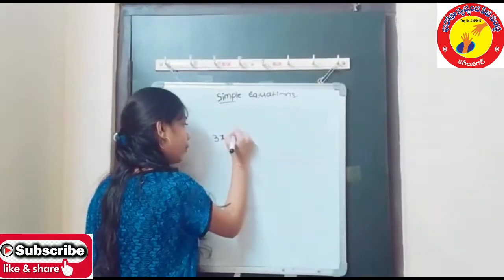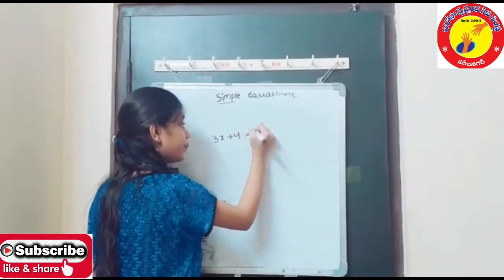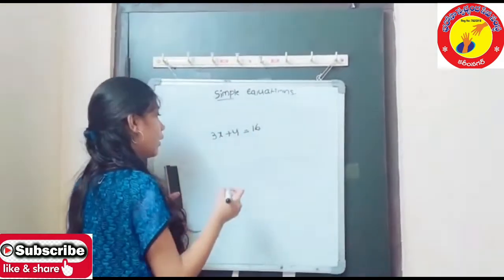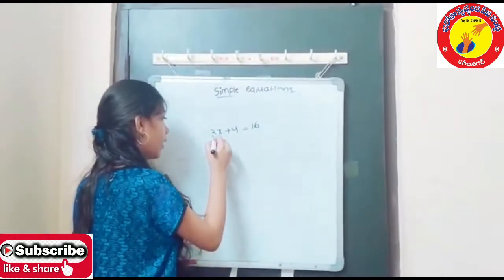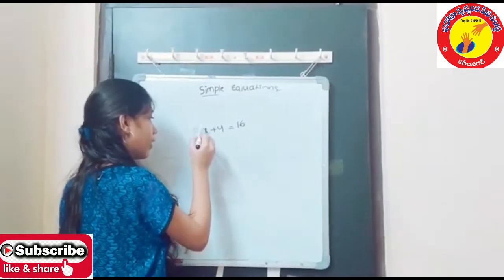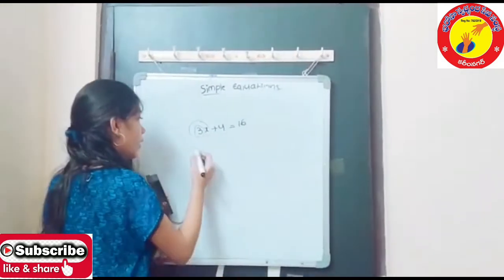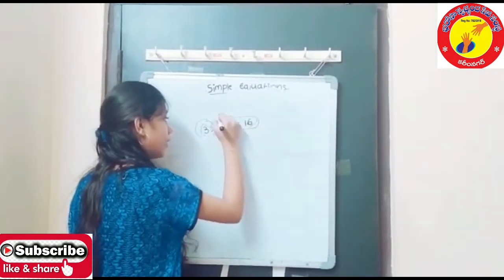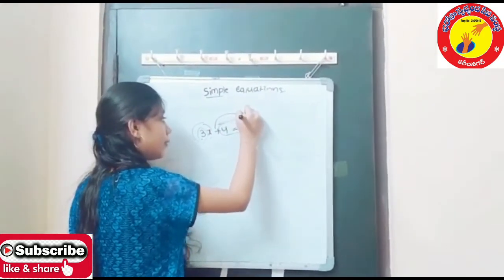Let me show how it's gonna do. 3X plus 4 is equals to 16. Here we got the extra 3. The 3 times of X is called 3X.